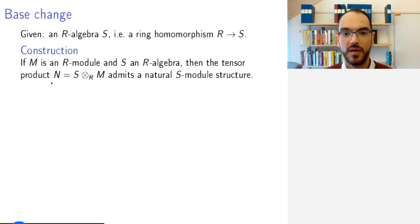So what I do is I tensor my R-module M with the ring S, and so now I can act on this module by scalars from S. How do I act?